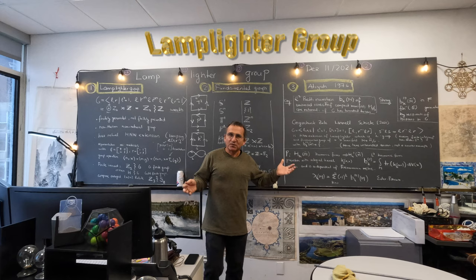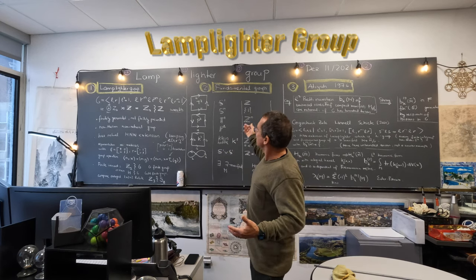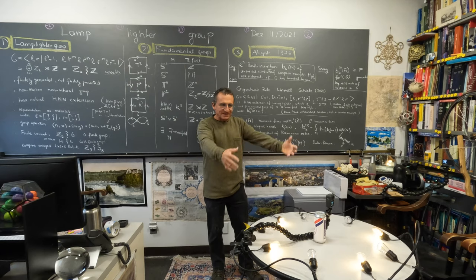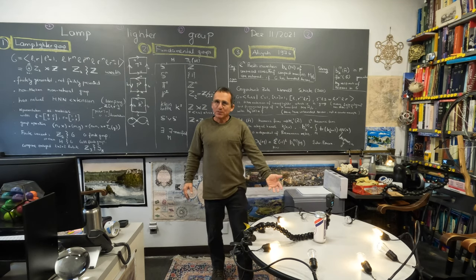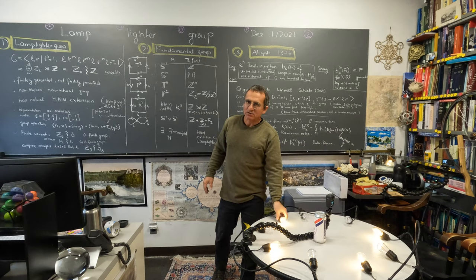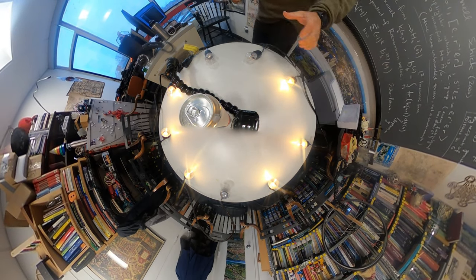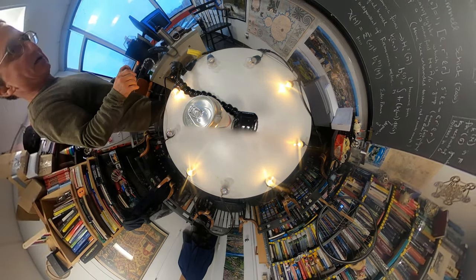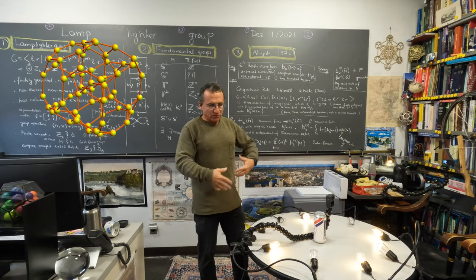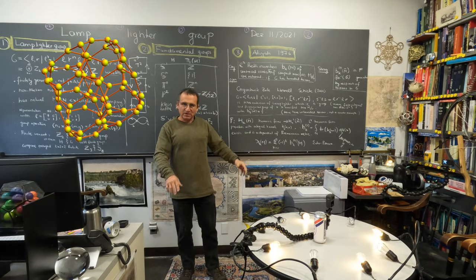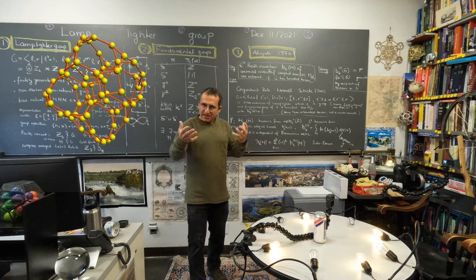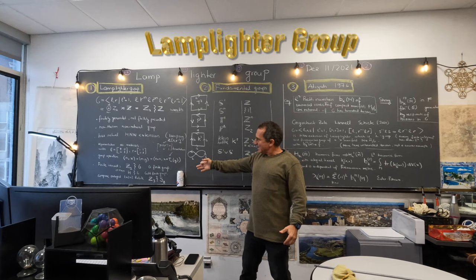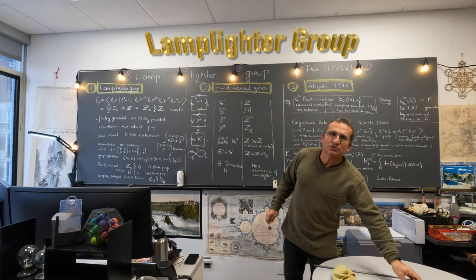This can also be generalized. Instead of the integers, you can take, for example, a cyclic group, and over every point you have a light on or off. You can move around and turn lights on and off. We can do that over arbitrary graphs and also arbitrary state groups — in this case Z₂. I like this also because it's really what happens in the Rubik's cube.